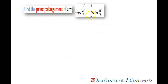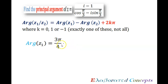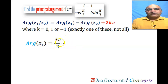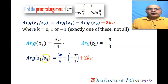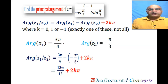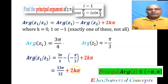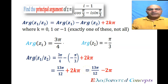Now to find the principal argument of division of two complex numbers, we use the property of division of complex numbers. Here argument of z1 equals 3π by 4, where z1 is i minus 1, and argument of z2 is minus π by 3, where z2 is cos(π/3) minus i·sin(π/3). Therefore argument of z1 upon z2 is 3π by 4 minus minus π by 3 plus 2kπ, which is 13π by 12 plus 2kπ. Since 13π by 12 is not in the interval minus π to π, we subtract 2π to get the principal argument, which is minus 11π by 12.